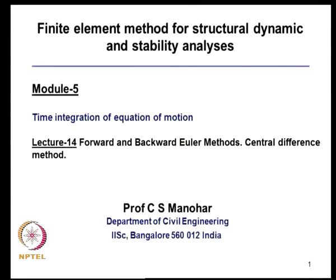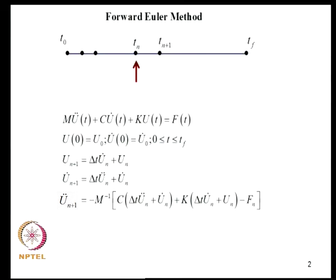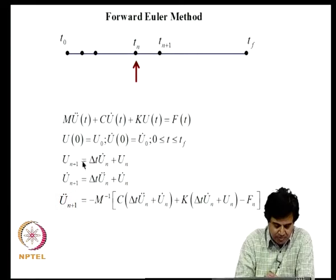In the last lecture we started talking about methods for time integration of equations of motion and introduced basic terminologies and the role of finite difference schemes. We started talking about the forward difference method or the forward Euler method. We consider the equilibrium equation restricted to linear systems: M·Ü + C·U̇ + K·U = F, with prescribed initial conditions over time duration 0 to T_F. The forward difference approximation to the derivatives leads to equations for displacements and velocities, giving us the evolution equation for displacement.